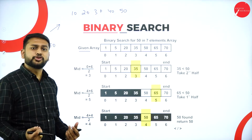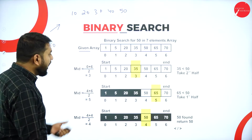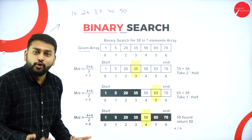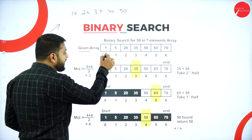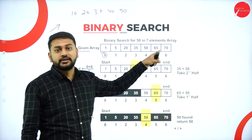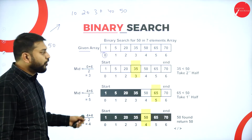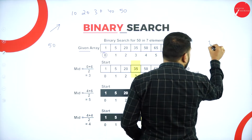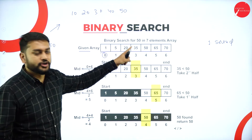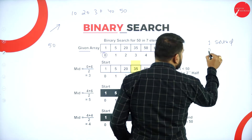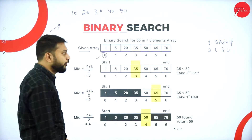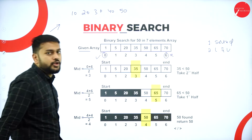Whenever I want to start binary search, I need to understand the lower bound and upper bound of the given array. The initial index of the array is what I call the lower bound, and the last index of the array is the upper bound. First, check sorted order — yes, checked. Then identify lower bound and upper bound. So 0 is the lower bound and 6 is the upper bound.